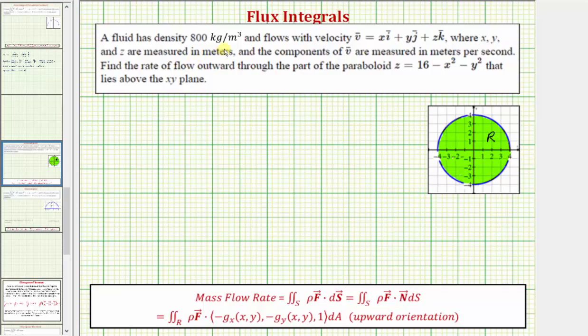A fluid has density 800 kilograms per meters cubed and flows with velocity given by the vector field V, where x, y, and z are measured in meters, and the components of V are measured in meters per second. We want to find the rate of flow outward through the part of the paraboloid z equals 16 minus x squared minus y squared that lies above the x-y plane.